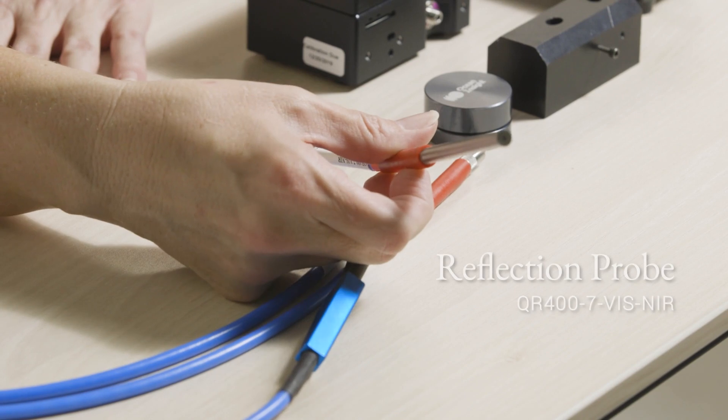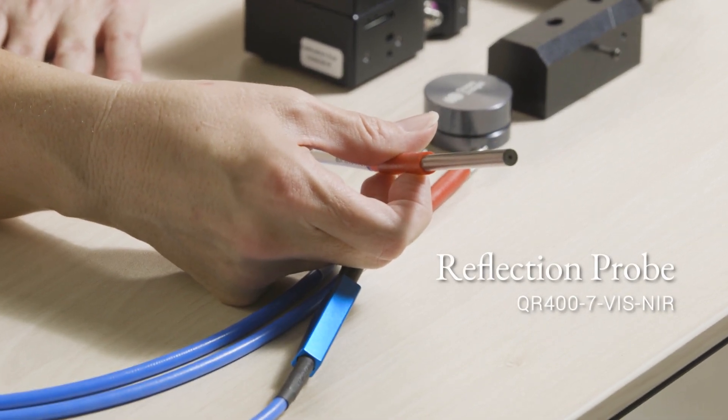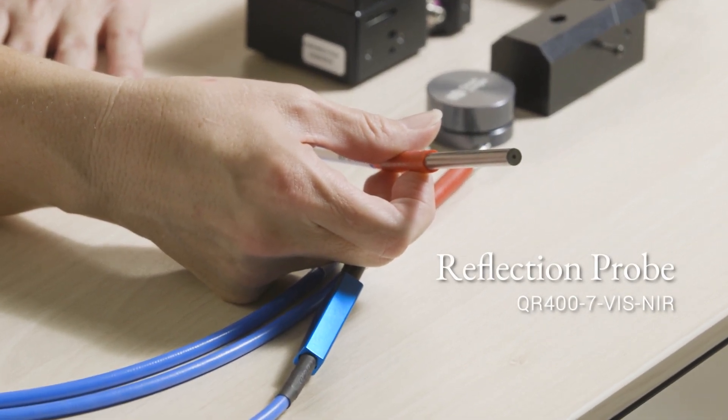Of course, the most important part of our setup is going to be our reflection probe, and this is going to enable us to couple our spectrometer and our light source to our sample for our reflectance measurement.